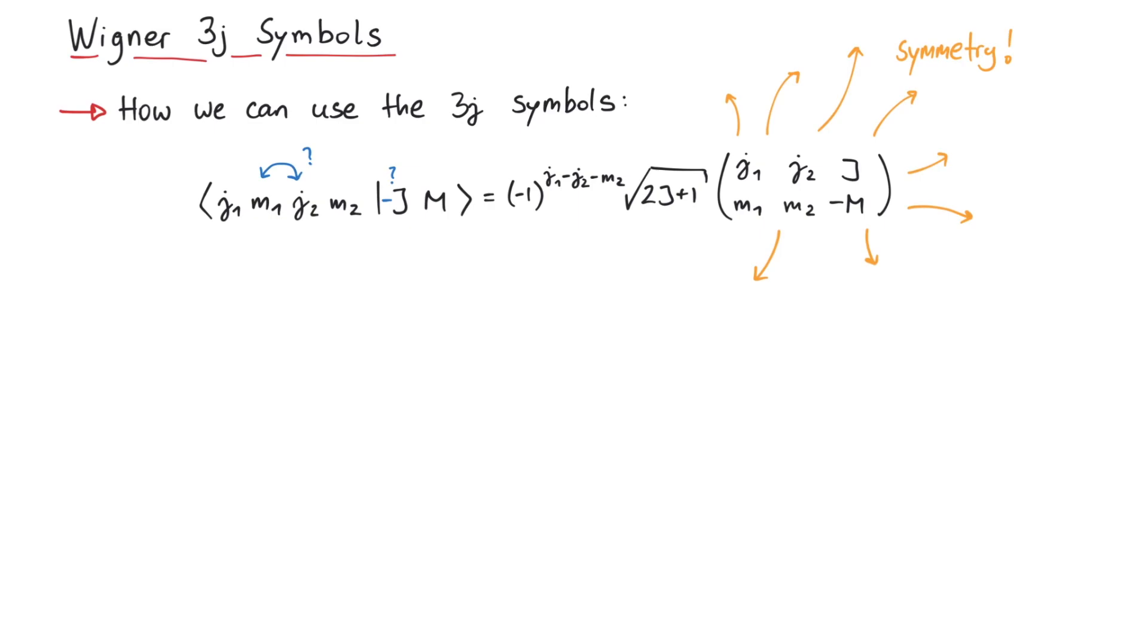We also have to mention the Wigner-Eckart theorem here. Since it involves Clebsch-Gordon coefficients, it can also be written in terms of a 3j symbol, like this. Now you can do two things. First, by using the three rules we mentioned in the beginning of this video, you can easily check if the result on the right-hand side is zero or not. Second, you can do a bunch of symmetry operations, and thereby easily investigate many more matrix elements of spherical tensor operators, without having to calculate another Clebsch-Gordon coefficient.